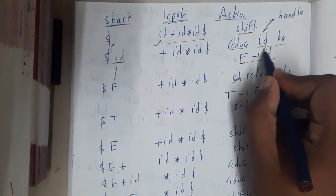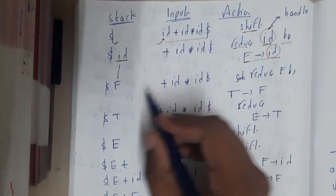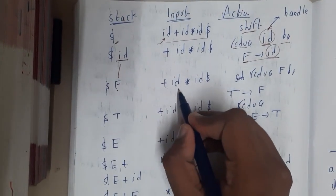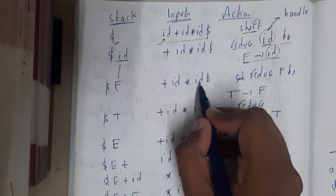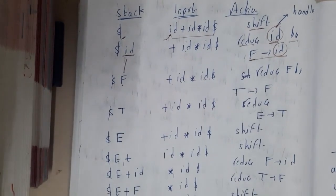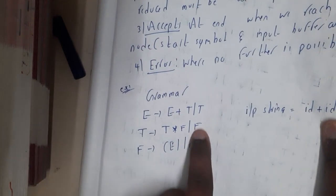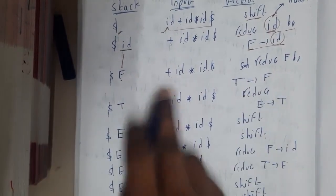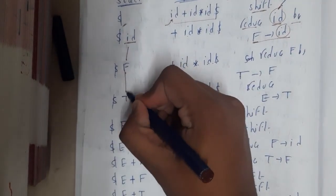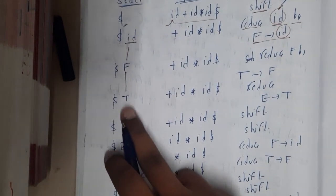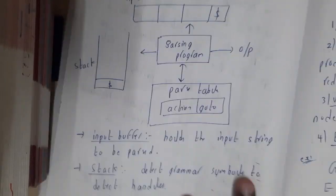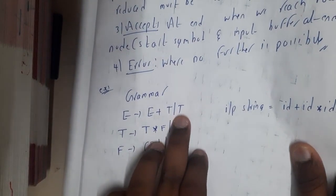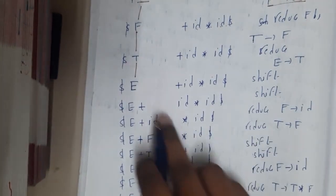Now the stack has dollar-F. F can be converted to T using T → F, so we reduce F to T. Again, this T can be reduced to E using E → T, so we reduce T to E. Now the stack has dollar-E.